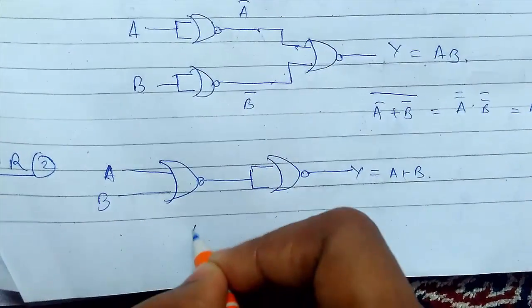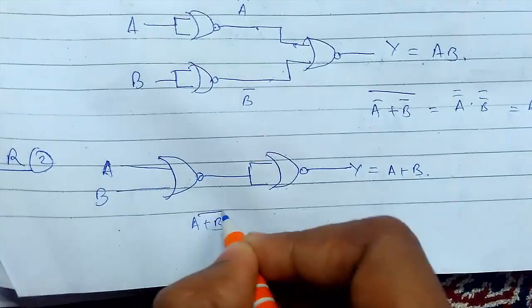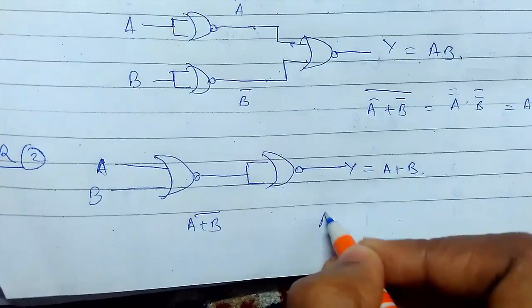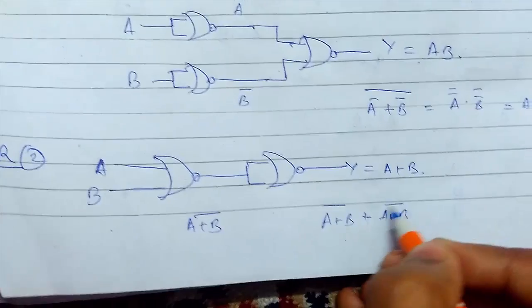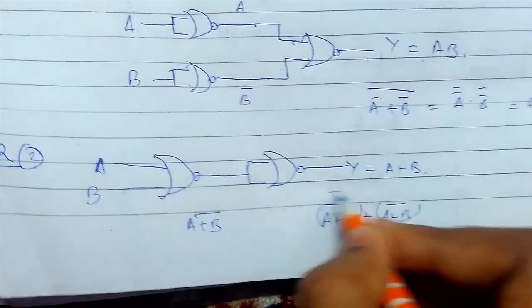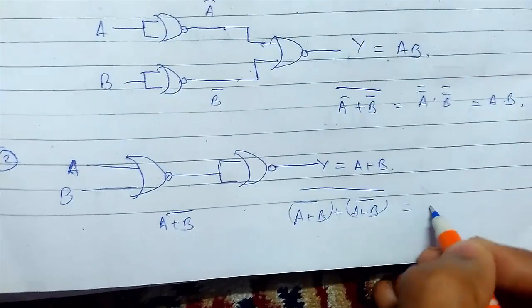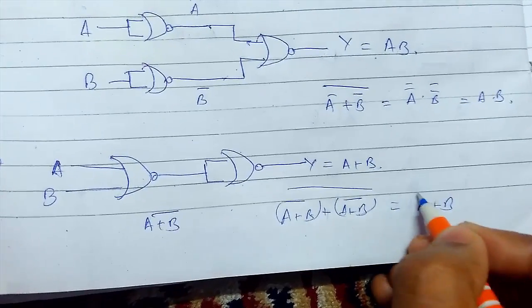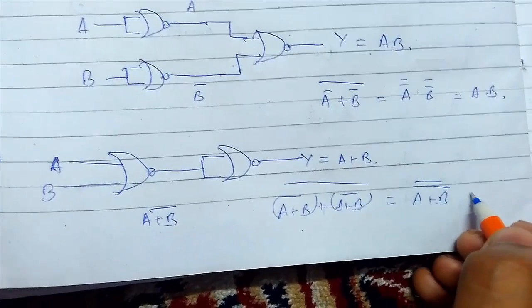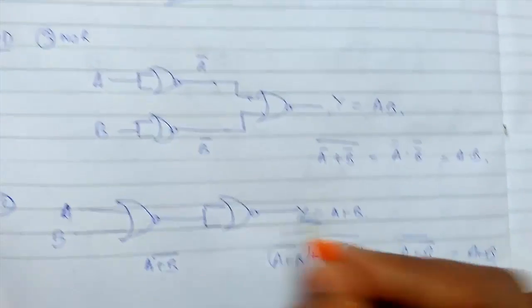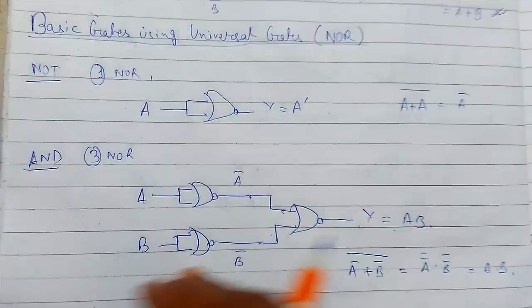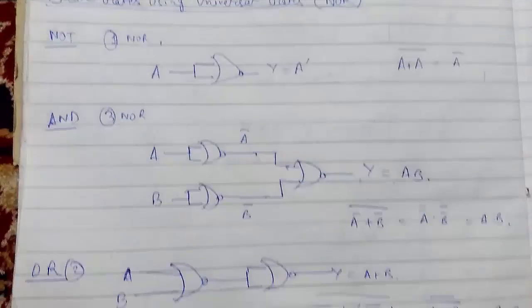This will give you A plus B whole bar. And now here it will give A plus B plus A plus B, this is in bracket and whole bar. This will combine as one. So A plus B whole bar, the bar gets removed. So this will be A plus B. This is how you convert basic gates using universal gates. Thanks for watching.